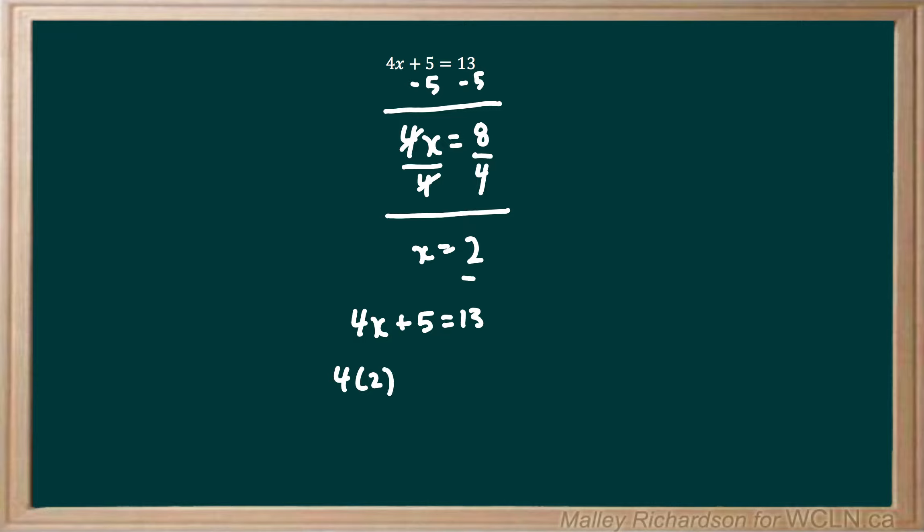We have 4 times 2 plus 5 equals 13. 4 times 2 is 8, so we have 8 plus 5 equals 13, and then 8 plus 5 is 13, so we have 13 equals 13, and x equals 2 was correct.